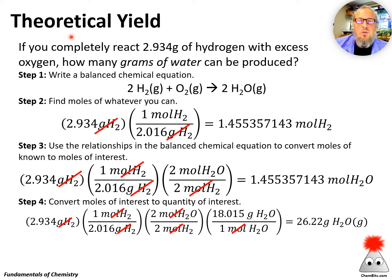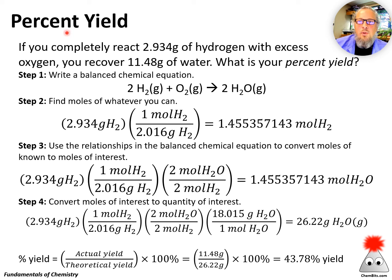What else can we do with stoichiometry problems? Well, a little addition to a theoretical yield problem is a percent yield problem. So if you completely react that many grams of hydrogen with excess oxygen, you recover 11.48 grams of water. What is your percent yield? Now, a percent yield, you all know how to do that. You know how to do percents. You do them on your exam scores, your quiz scores all the time.